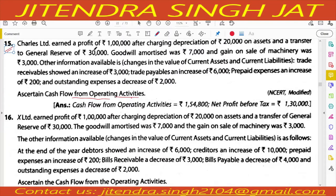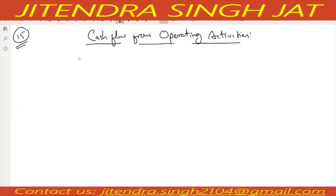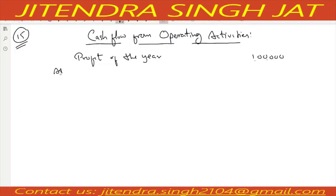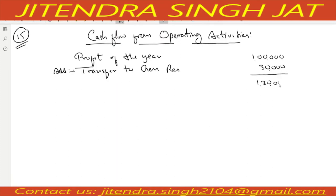Profit is given of Rs. 1,00,000. Then we need to add some appropriations. In this question, there is only one appropriation: transfer to general reserve of Rs. 30,000. When we add, we get Rs. 1,30,000. This is our net profit before tax. Extraordinary items are not given in the question.